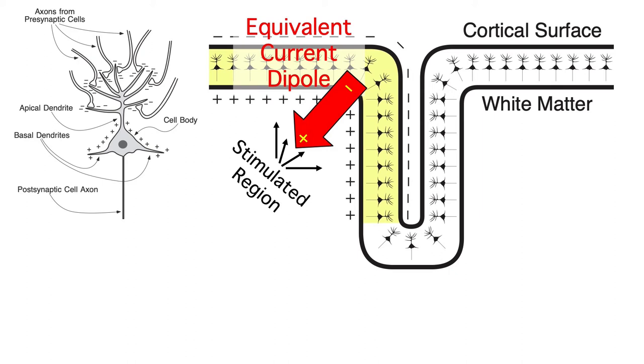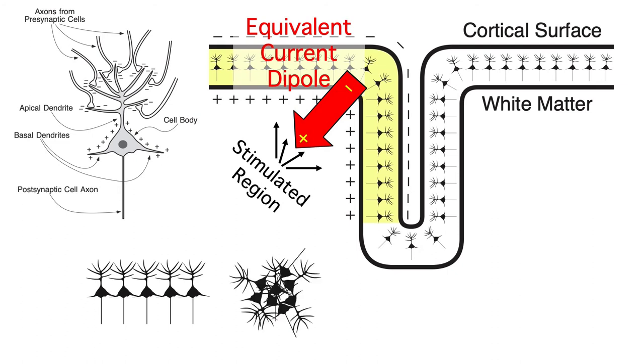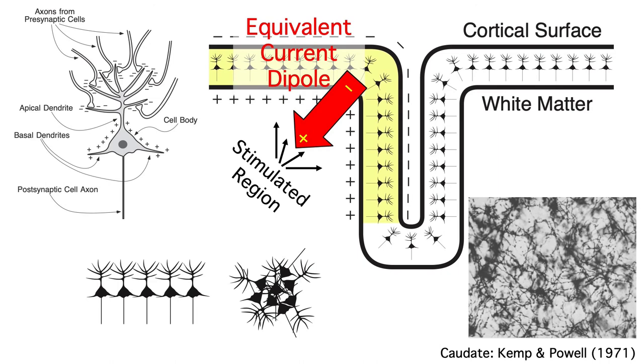It's also important that the cortical pyramidal cells are parallel to each other, allowing their dipoles to sum to a large value. If the neurons were randomly rotated, their dipoles would cancel out. As a result, you can't get ERPs on the scalp from areas like the caudate nucleus, where the neurons are randomly oriented.